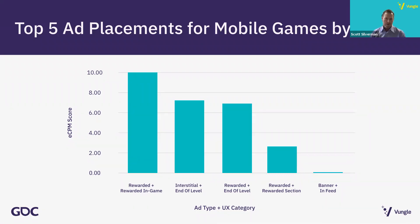Interstitials also proved to be valuable for mobile game developers, especially when placed at the end of a level where their unprompted nature doesn't interrupt the player experience. These interstitials were followed closely by rewarded ads placed at the end of gameplay, where they often offered players the chance to multiply their score or continue the game in exchange for watching an ad. Finally, rewarded ad placements within dedicated menus and banner ads deployed within various moments of a game offered mobile game publishers reliable revenue, though their lower eCPMs likely necessitate a higher volume of impressions.